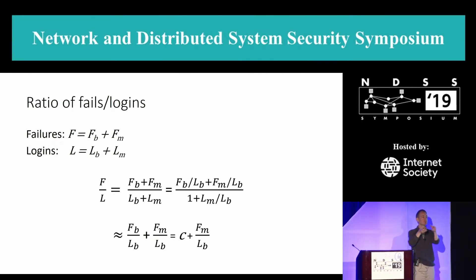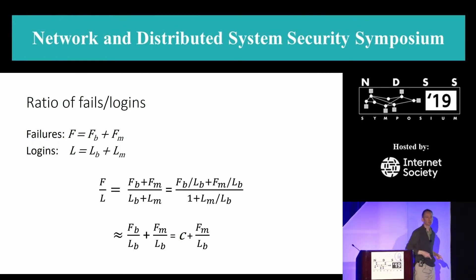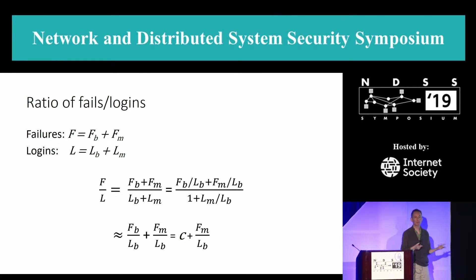I'm going to use this discriminating feature to identify how much traffic in any given block is malicious, use that to find the blocks that are clean, use those to estimate the clean distribution of the other features, and then calculate the likelihood ratio, and I'm done.